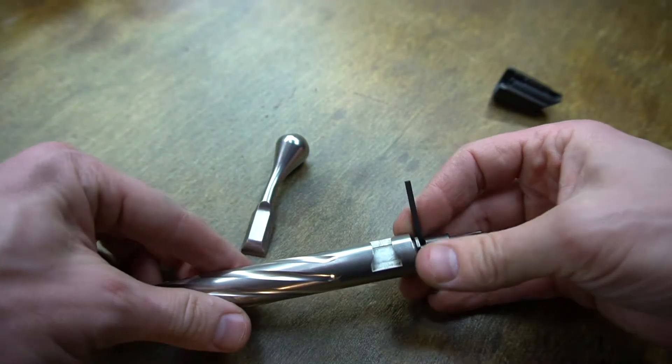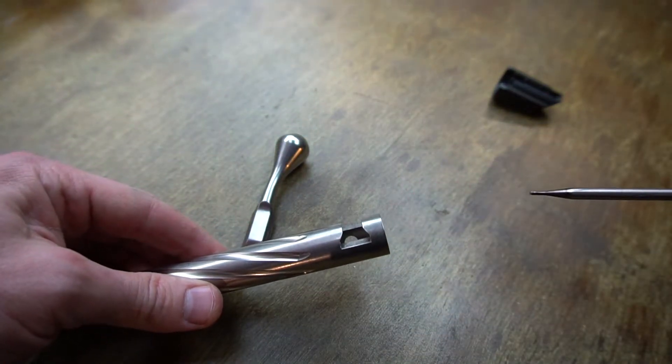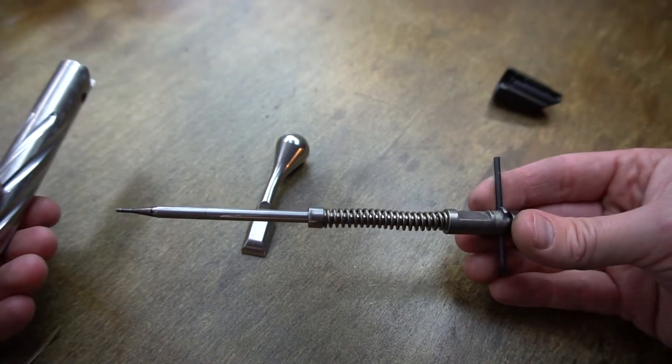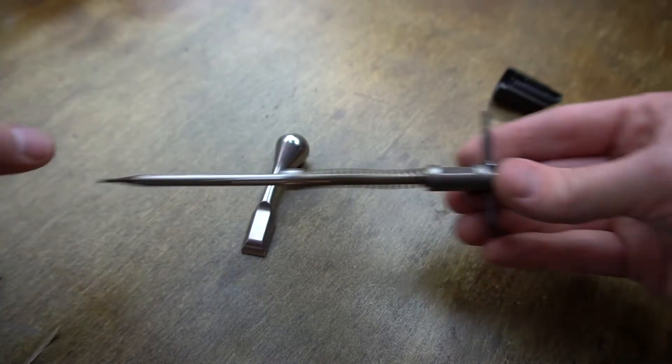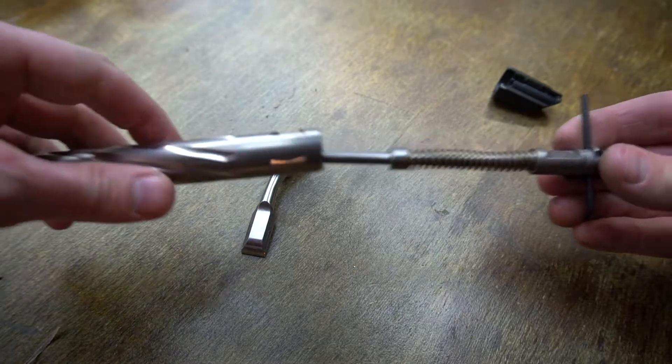Okay, we'll set that right here. This is where you can take the firing pin out. You can clean it, do whatever you need to do. You can see where the bolt handle rides in the firing pin there.